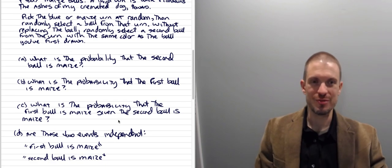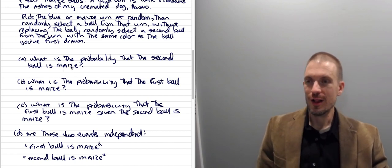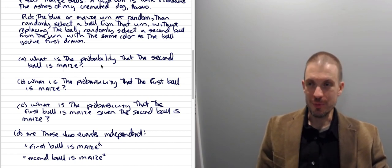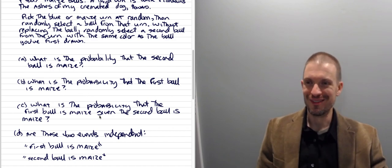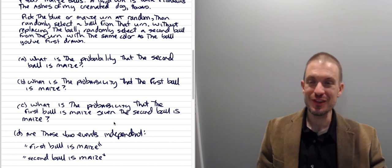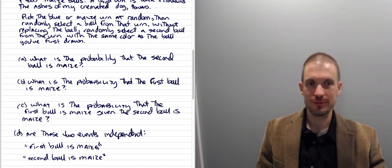Here are the questions — you might want to pause the video and write them down. What's the probability the second ball is maize? What's the probability the first ball is maize? What's the probability that the first ball is maize given the second ball is maize? And are these two events — first ball is maize and second ball is maize — independent?